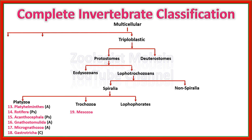The Trochozoans, which have trochophore larvae, include Mesozoa, Nemertia, Annelida, and Mollusca. These four phyla belong to clade Trochozoa. Among these, Nemertians are acoelomates, Annelids are coelomates, and Molluscs are also true coelomates with a true body cavity.